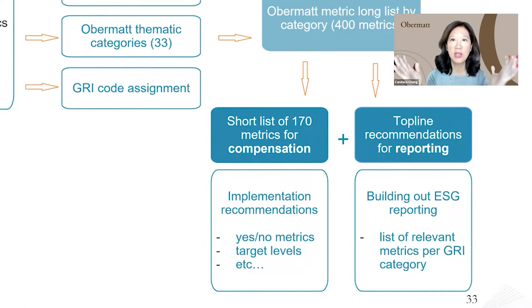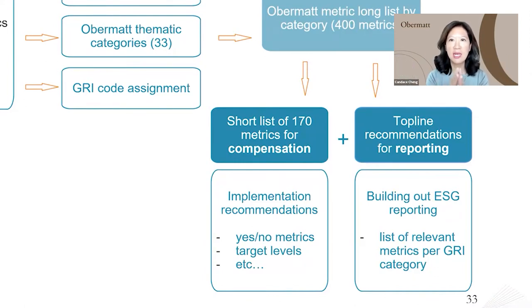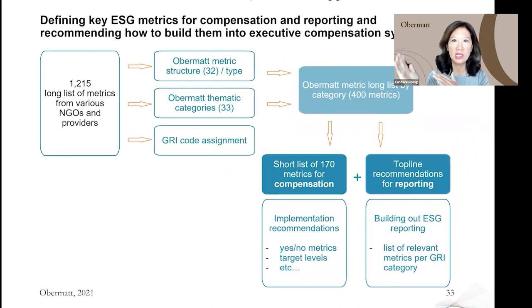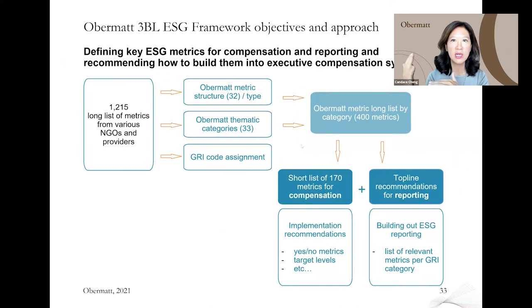Out of this 1,200, we've really tried to narrow down to 170 unique metrics that we think could be relevant from a reporting and a compensation perspective. We've categorized them according to the type of metric, as well as to the topic.